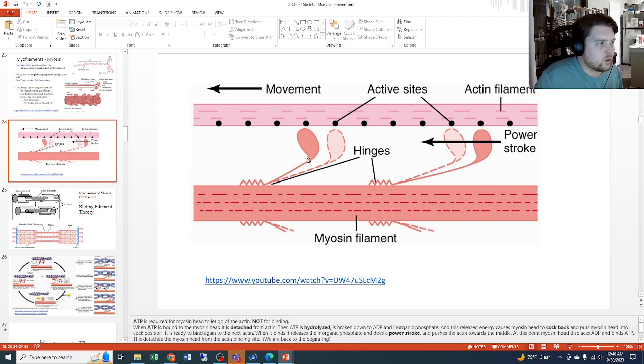So this myosin head kind of comes down and cocks and resets because it has energy. It holds onto that energy, and in the sense of this picture, you can almost look at it as coming down to the next binding site that is on the actin and repeat that process over and over again.